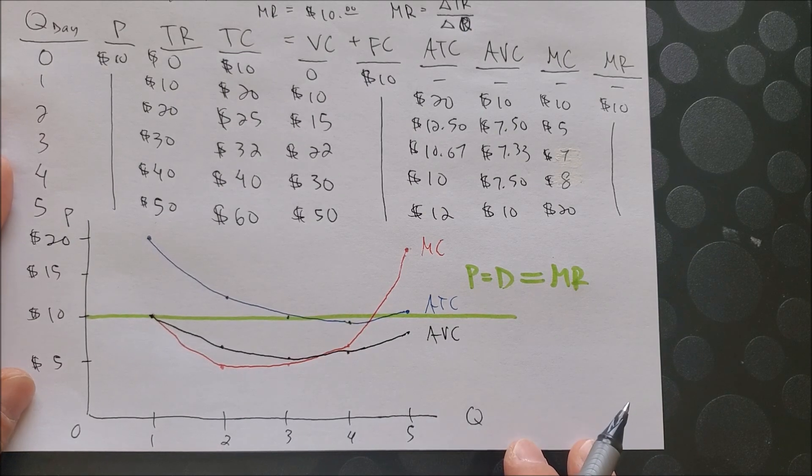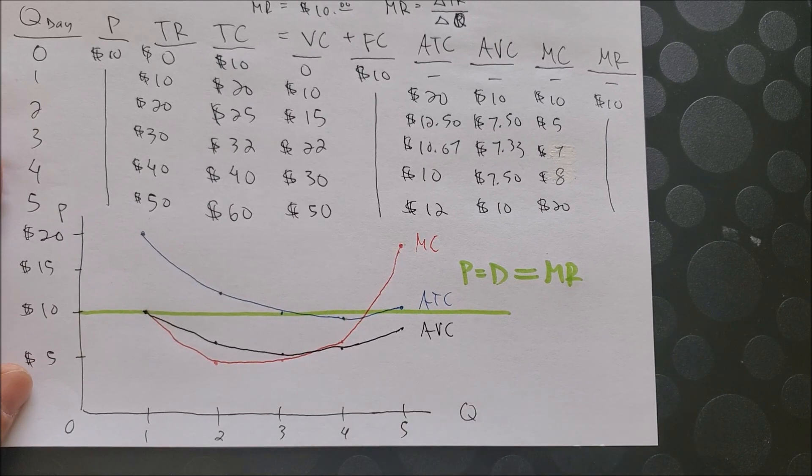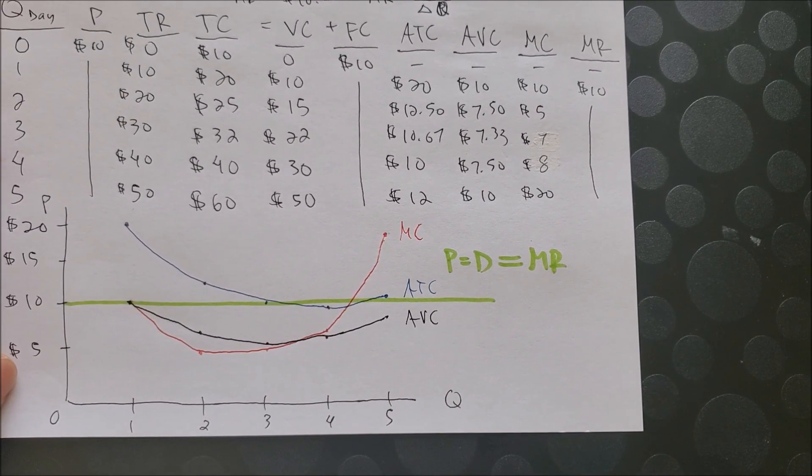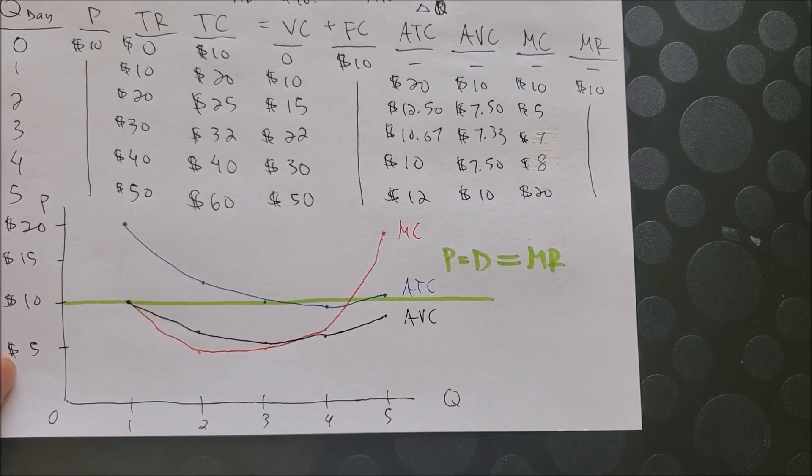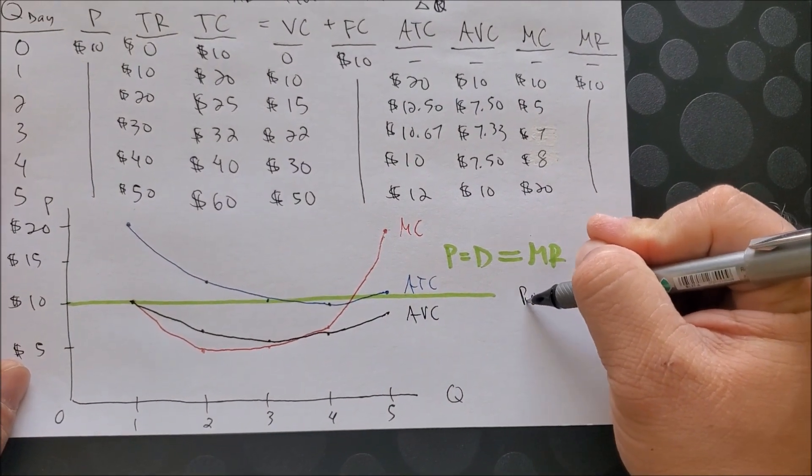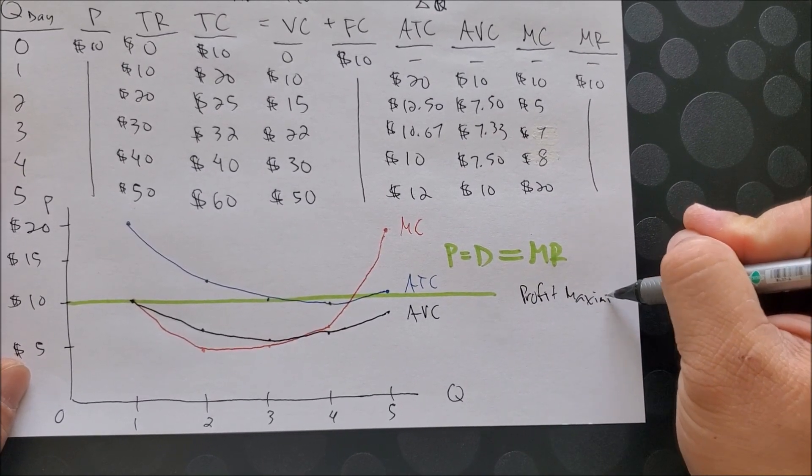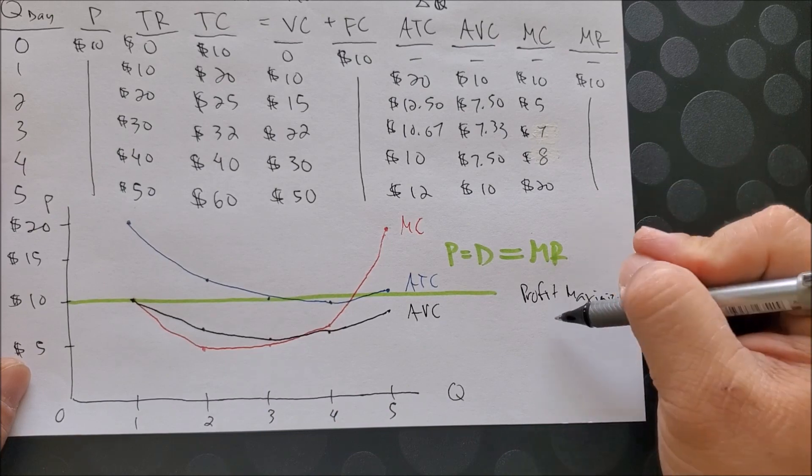Now, in the last video we looked at the break-even and shutdown points. But since now that price is given, we want to find out what is the profit maximization point.